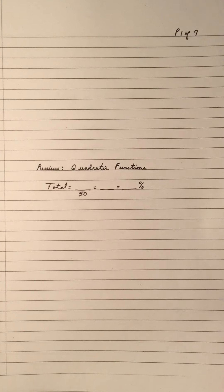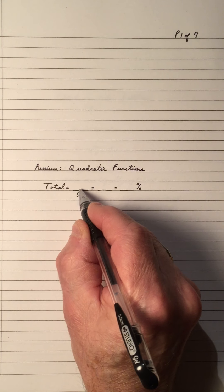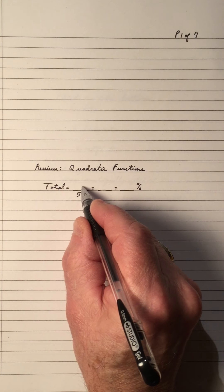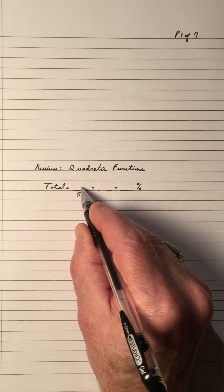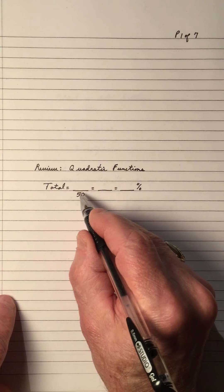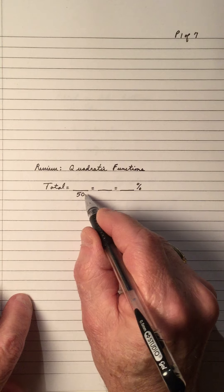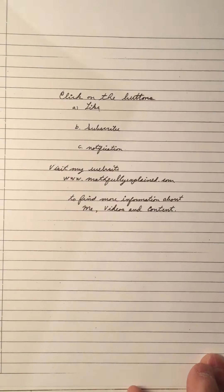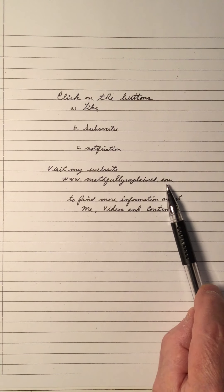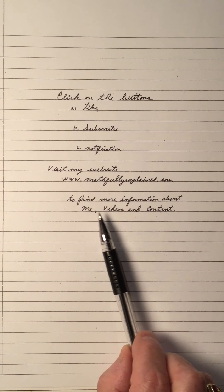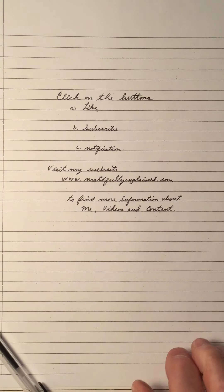That brings us to the end. Total up all your pages — your mark is out of 50. Either divide 50 into your score and get a decimal, then move two decimal places right, or simply double your mark to get your percentage. Hopefully you did well on quadratic functions. If you like this video, click the like and subscribe buttons and notification bell. Visit my website at www.mathfullyexplained.com. Thank you for viewing — bye-bye.